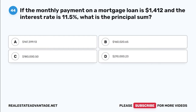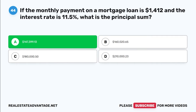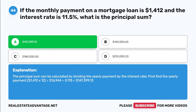Question 44. If the monthly payment on a mortgage loan is $1,412 and the interest rate is 11.5%, what is the principal sum? A. $147,399.13. B. $160,020.65. C. $180,050. D. $210,023. The correct answer is A: $147,399.13. The principal sum can be calculated by dividing the yearly payment by the interest rate. First find the yearly payment: $1,412 × 12 = $16,944 ÷ 0.115 = $147,399.13.